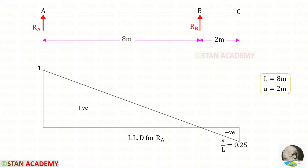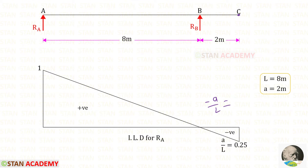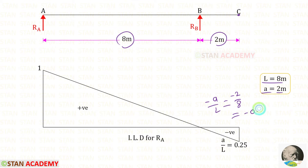First we are going to draw the ILD for RA. In the previous video we have seen the derivations — how to get these ordinates. At point A, the ordinate will be 1. At point B, the ordinate will be 0. At point C, the ordinate will be minus A upon L. Here L is 8 and A is 2, so minus 2 upon 8, we get minus 0.25.